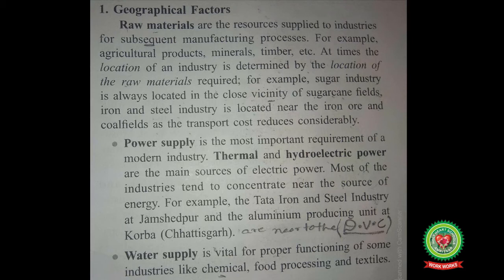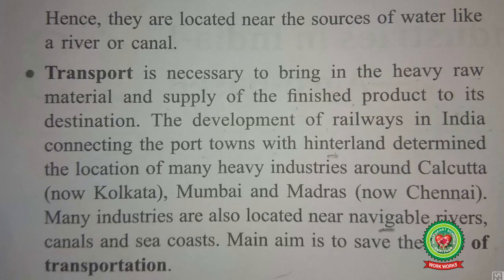The next point is water supply. Water supply is vital for the proper functioning of some industries like chemical, food processing and textiles. Hence, they are located near water sources like rivers or canals. For example, jute factories are always located near rivers because jute requires a lot of water to extract jute yarn from the jute plant.